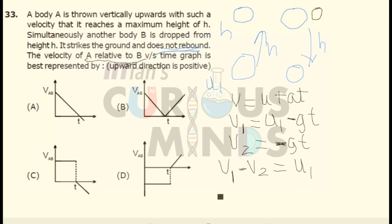Now u1 is a positive value because the first body is thrown initially upwards and it is a constant value. Initial velocity is a constant value. So now over here for the constant value the graph obtained will be somewhat like this.